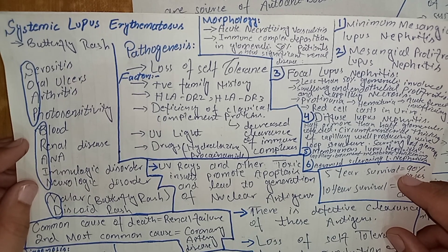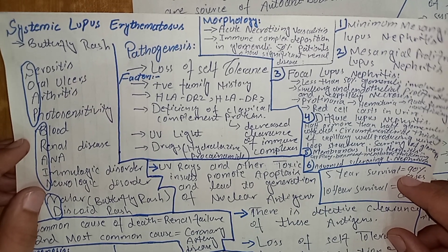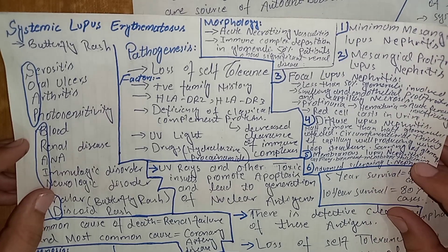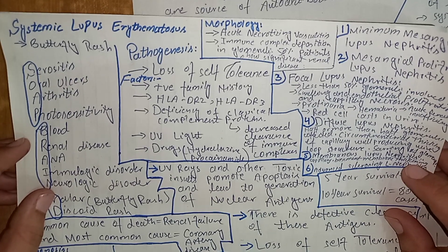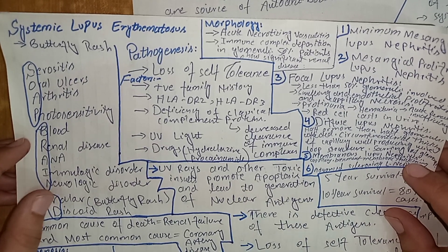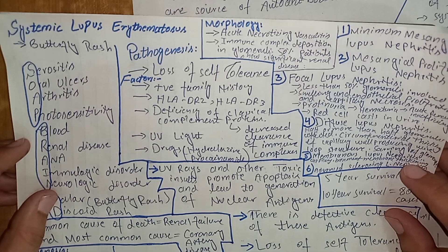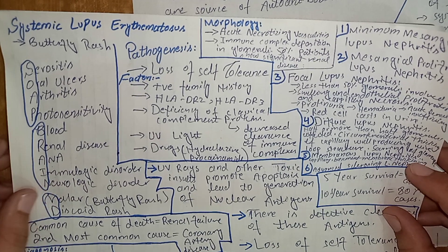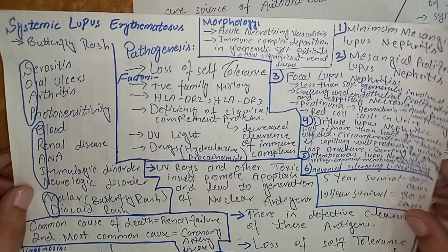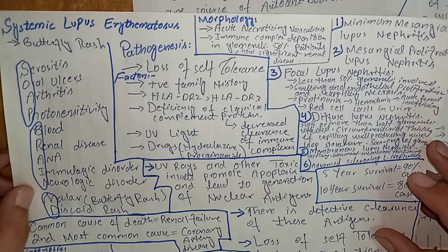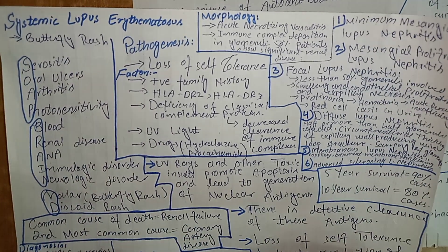The pathogenesis of SLE, like any autoimmune disease, arises from breakdown of the self-tolerance mechanism. There can be breakdown of central or peripheral tolerance, which leads to the production of autoreactive T cells or autoantibodies.